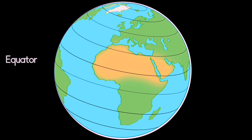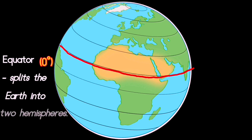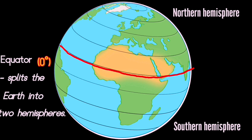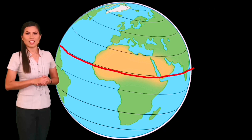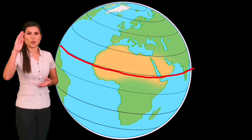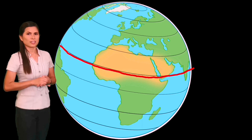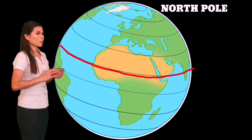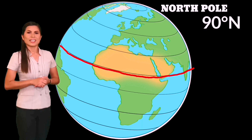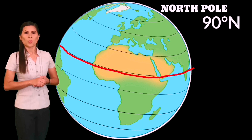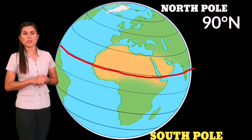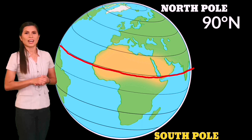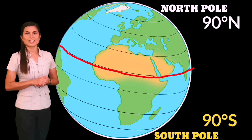The equator is at zero degree latitude. It splits into two hemispheres: the northern hemisphere and southern hemisphere. It is at the center between north and south. The North Pole is located at 90 degrees north, while the South Pole is located at 90 degrees south.